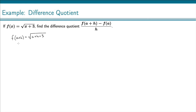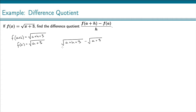f of a, of course, is just plugging a in, so that is the square root of a plus 3. So for our difference quotient now, we're going to subtract these: the square root of a plus h plus 3, minus the square root of a plus 3, and divide that by h.